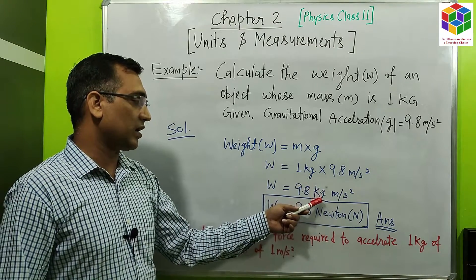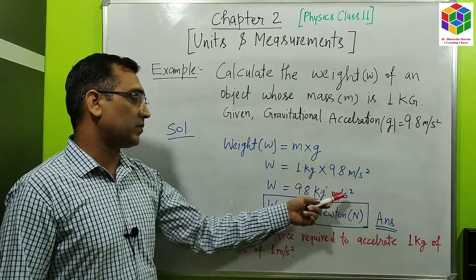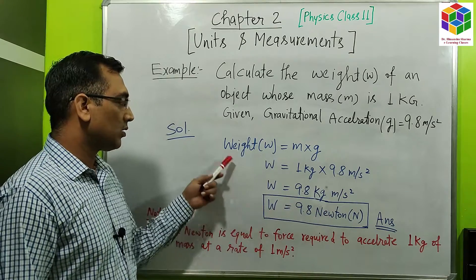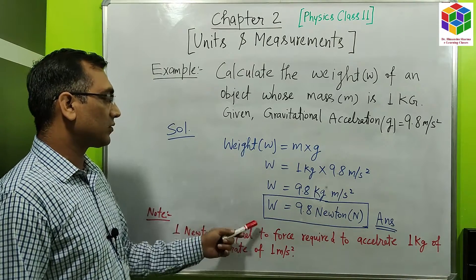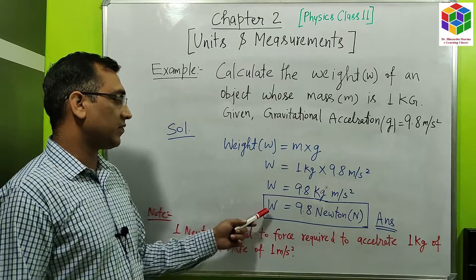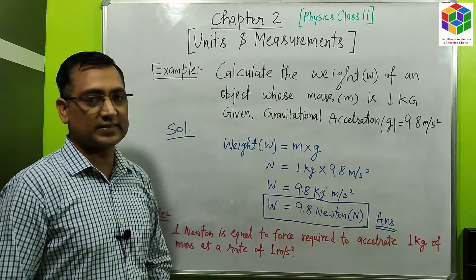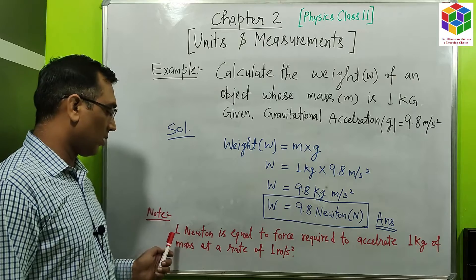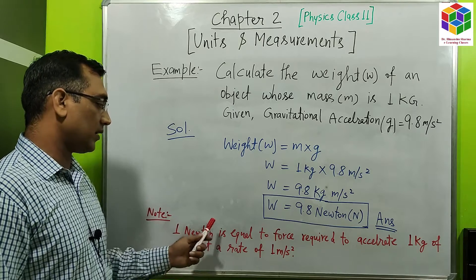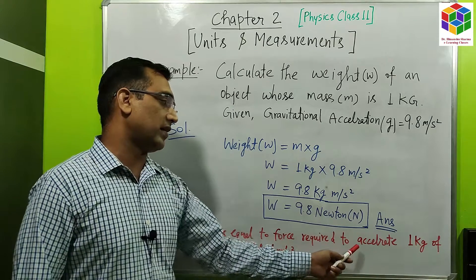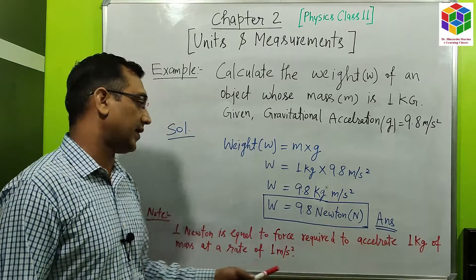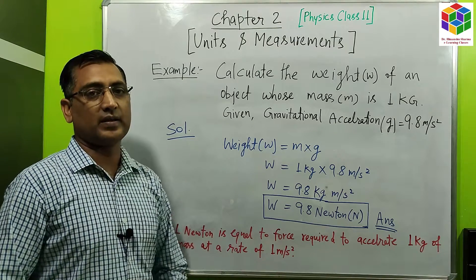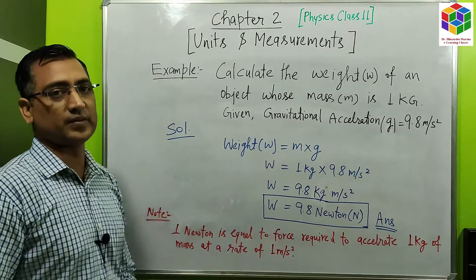We know that kilogram into meter per second square is equal to Newton. So the weight of the object will be 9.8 Newtons — that is our answer. A very important note: 1 Newton is equal to the force required to accelerate 1 kilogram of mass at a rate of 1 meter per second square.